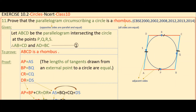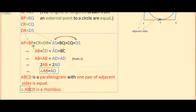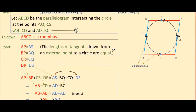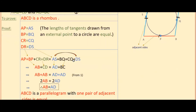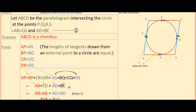Adding all these: AP + BP + CR + DR = AS + BQ + CQ + DS. Now AP + BP equals AB, and CR + DR equals CD, and AS + DS equals AD, and BQ + CQ equals BC.